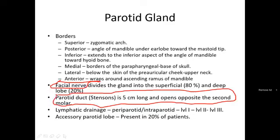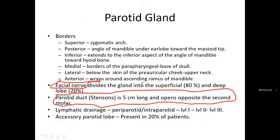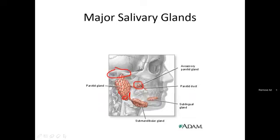The lymphatics drain to pre-parotid and intra-parotid nodes at levels 1 through 5. The accessory parotid duct is present in 20% of patients, so it is not something to be overly concerned about, but if the disease is present in that accessory gland, it will not subside when treating the main gland.